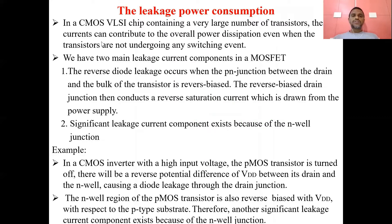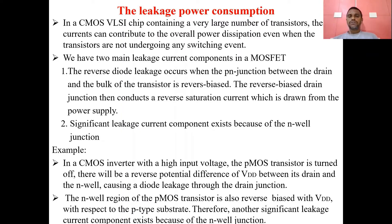In a CMOS VLSI chip containing a very large number of transistors, those currents can contribute to the overall power dissipation even when the transistors are not undergoing any switching event. VLSI means millions of transistors are placed on a silicon chip. Even though they are not switching — that is, transitioning on to off or off to on — there will still be power consumption in each transistor that contributes to the total power consumption.